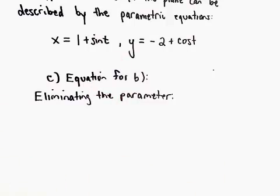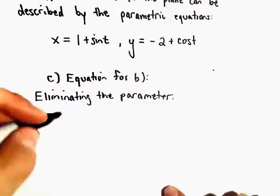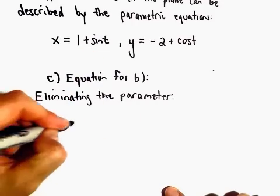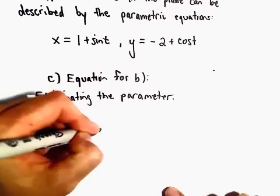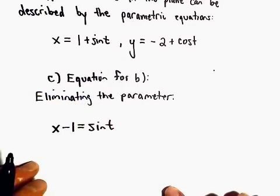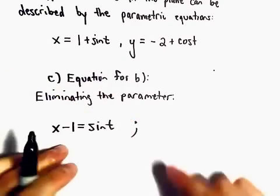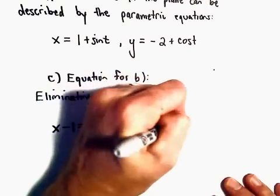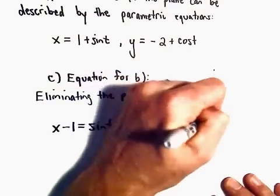And then hopefully that will be something, a formula that I'll recognize. So let's see, notice our x equals 1 plus sine t. We can subtract 1 and get x minus 1 equals sine t. We can add 2 and have y plus 2 equaling cosine t.